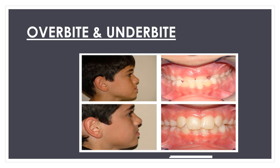The next conditions are overbite and underbite. An overbite is when the upper teeth protrude significantly over the lower teeth. Underbite is when the lower teeth protrude significantly past the upper teeth. You can easily see these structures in the diagram.